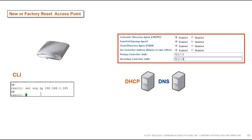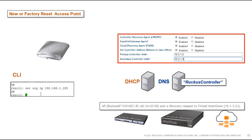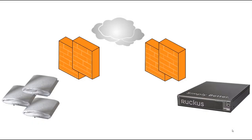Another option is DHCP, where a DHCP option can be specified that gives the client access point information about where the controller resides. With DNS, we can specify an A record for the particular controller, so when the access point comes online it can communicate with the controller. Once contact is made via any of these methods, we'll get an event entry on the SmartZone itself.